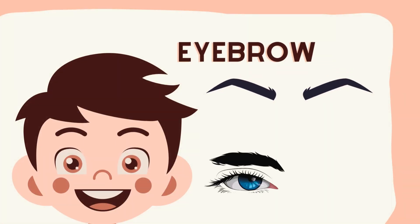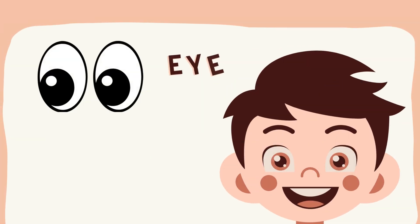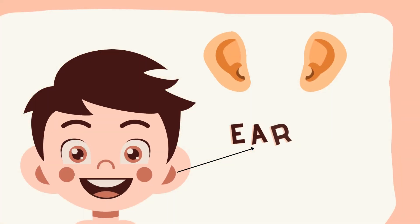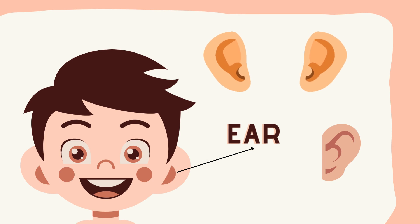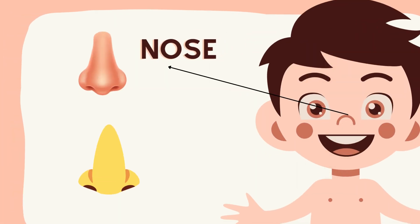Eyebrow — Bow. Eye — Aag. Ear — Corn. Nose — Nark.